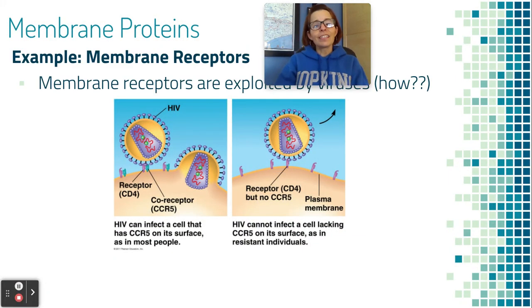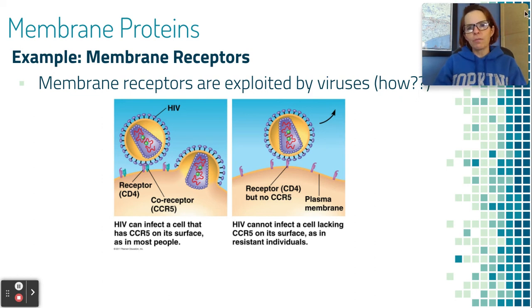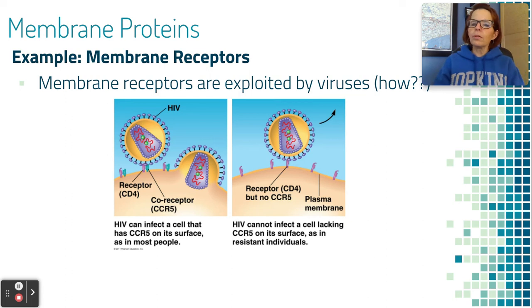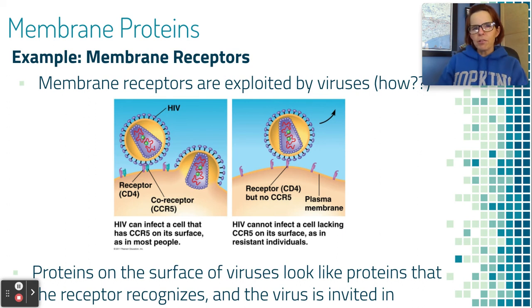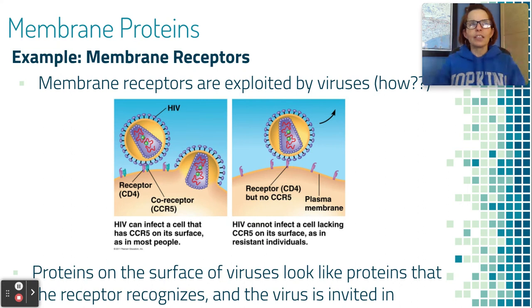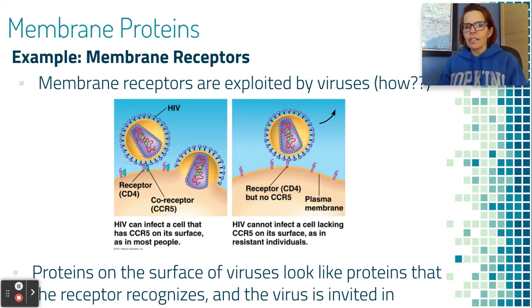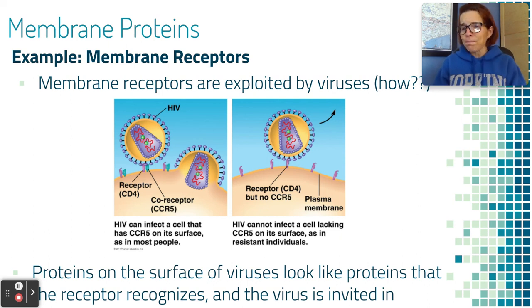Membrane receptors are exploited by viruses — they take advantage of the fact that we have these receptors. Proteins on the surface of viruses look chemically similar to molecules that receptors recognize, so the receptor invites the virus inside, thinking it's a harmless molecule. That's when the virus takes over.